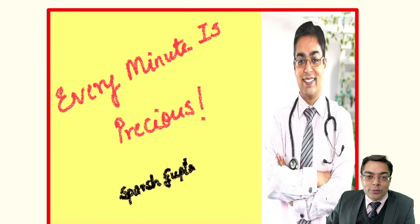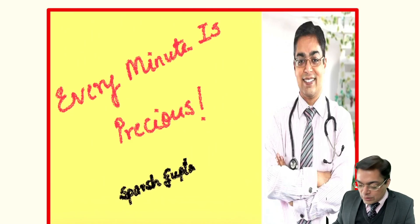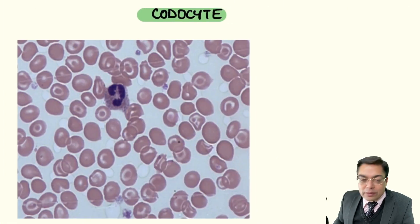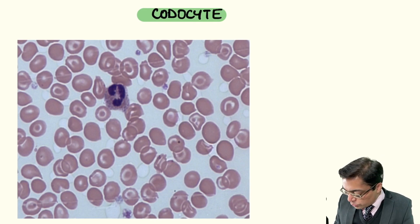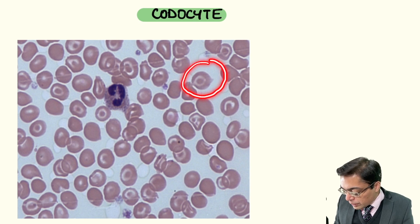Hi friends, welcome to the new episode of Every Minute is Pressure series. Now the important image for the day — we are talking about an example of a cell which is going to be having the presence of what is being termed as a target-like appearance or a bull's eye appearance.